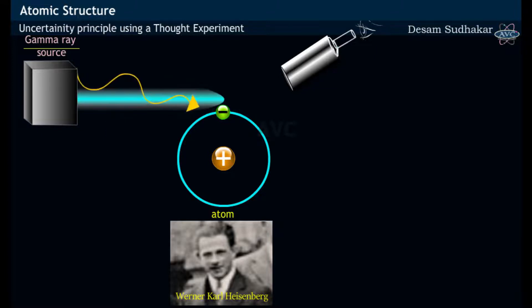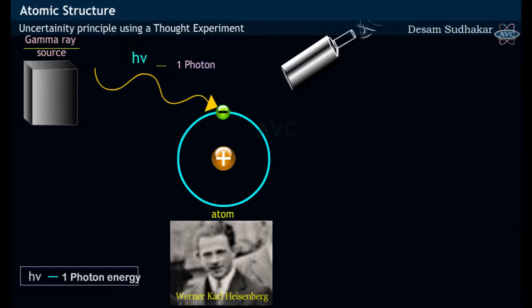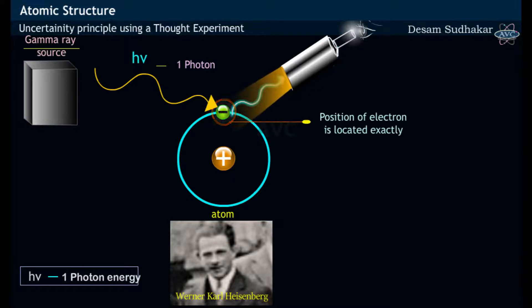After coming in contact with the electron, the light having at least one photon energy gets diffracted and later enters into the microscope. This diffracted light entering the microscope allows us to locate the position of electron exactly, i.e., there is no uncertainty in position.